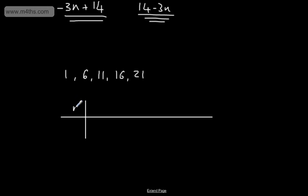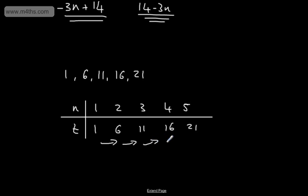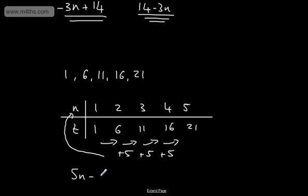We'll put this in a table. The positions are 1, 2, 3, 4, and 5. The terms are 1, 6, 11, 16, and 21 — going up by 5 each time, a fixed amount of plus 5. So we're going to multiply 5 by n, so the sequence starts 5n. 5 times 1 is 5 — what do I need to do to get to 1? The answer is subtract 4. 5 times 2 is 10, subtract 4 is 6. 5 times 3 is 15, subtract 4 is 11. So the nth term is 5n minus 4. Those are basic examples of finding the nth term of a linear sequence.